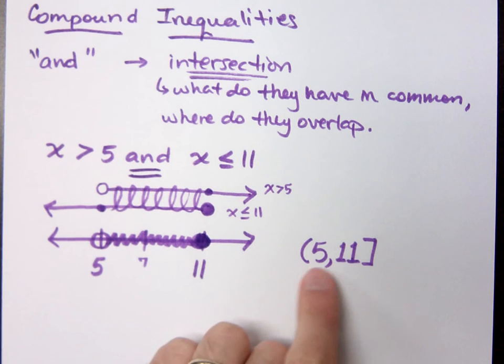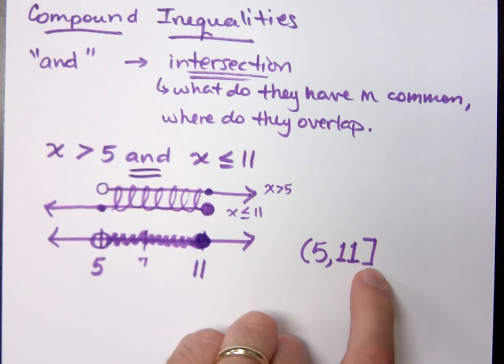The parentheses means you can get as close to 5 as you want to without touching it. The 11 with a bracket means you can get all the way up to 11, and you can actually include that. You can touch that and grab onto it.